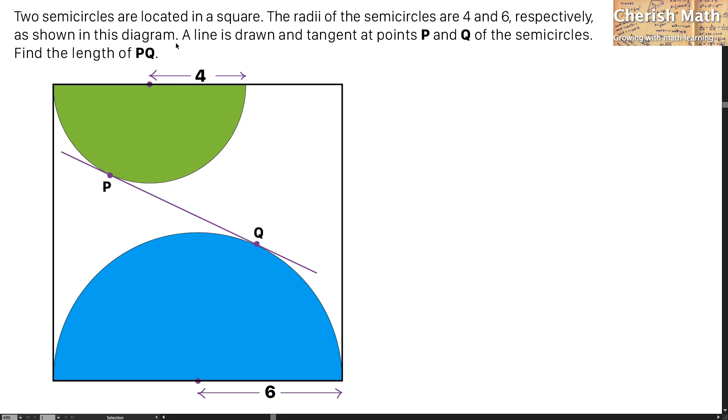As shown in this diagram, a line is drawn and tangent at points P and Q of the semicircles. Find the length of PQ.